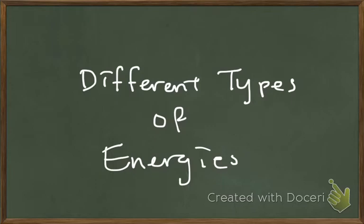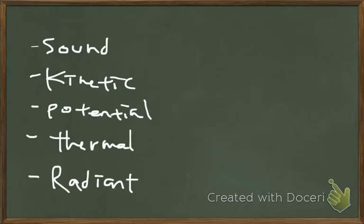There are different types of energies. These include sound energy, which deals with things we hear, and potential energy, which deals with an object's position. There's gravitational, elastic, and electric potential energy.